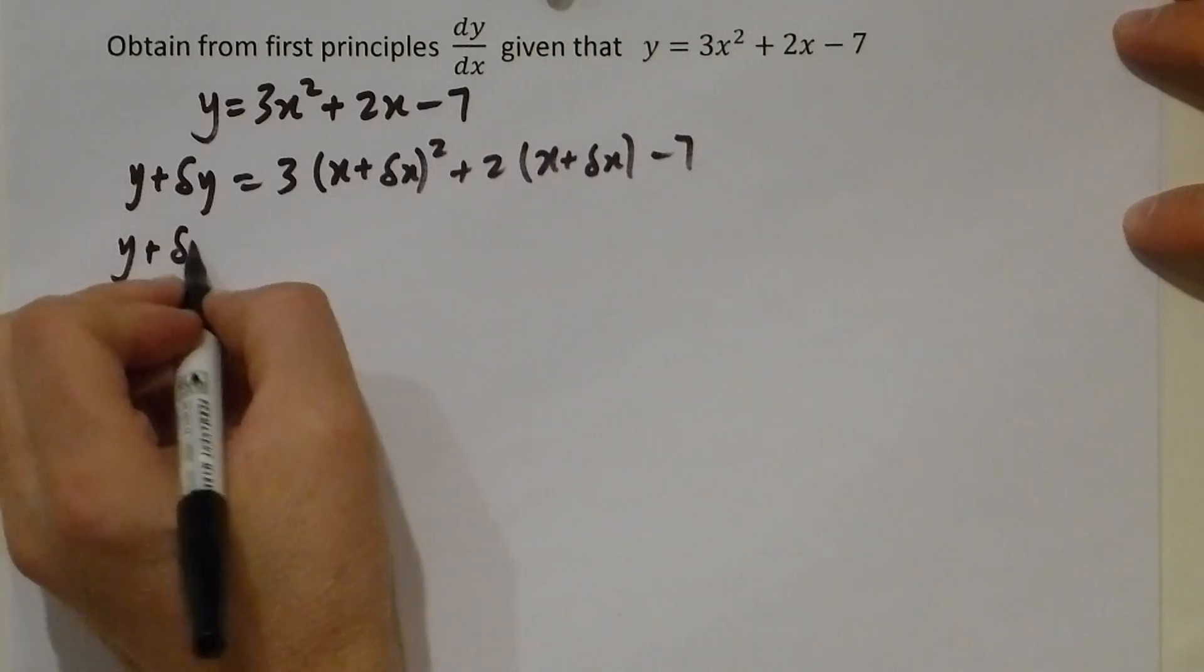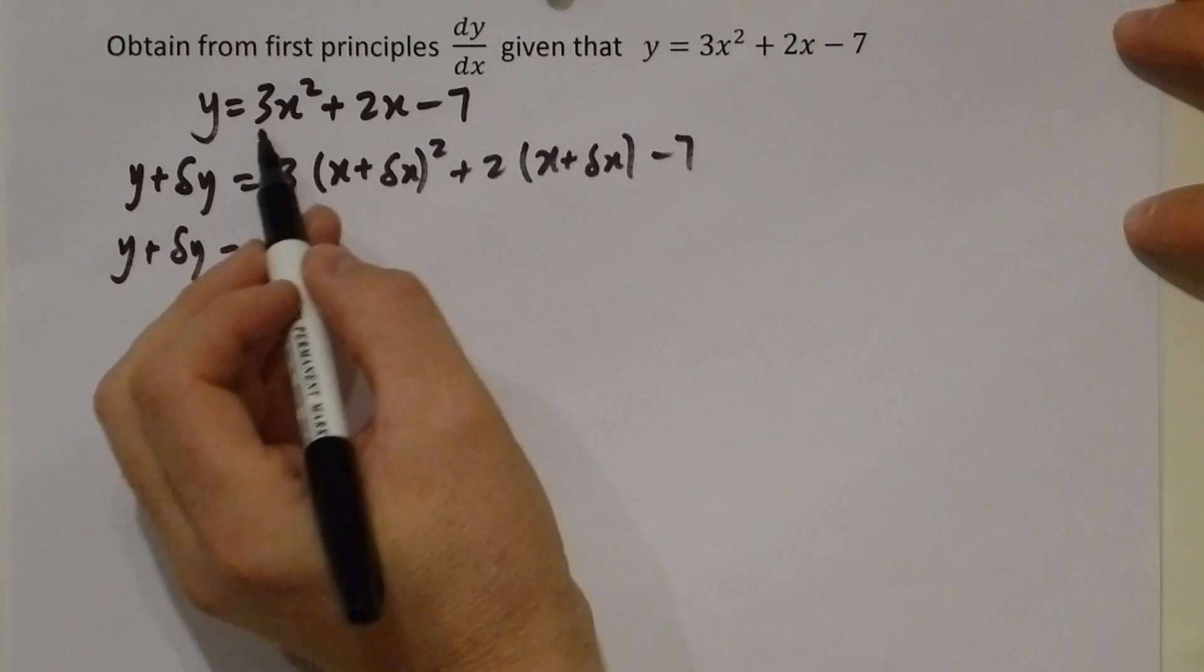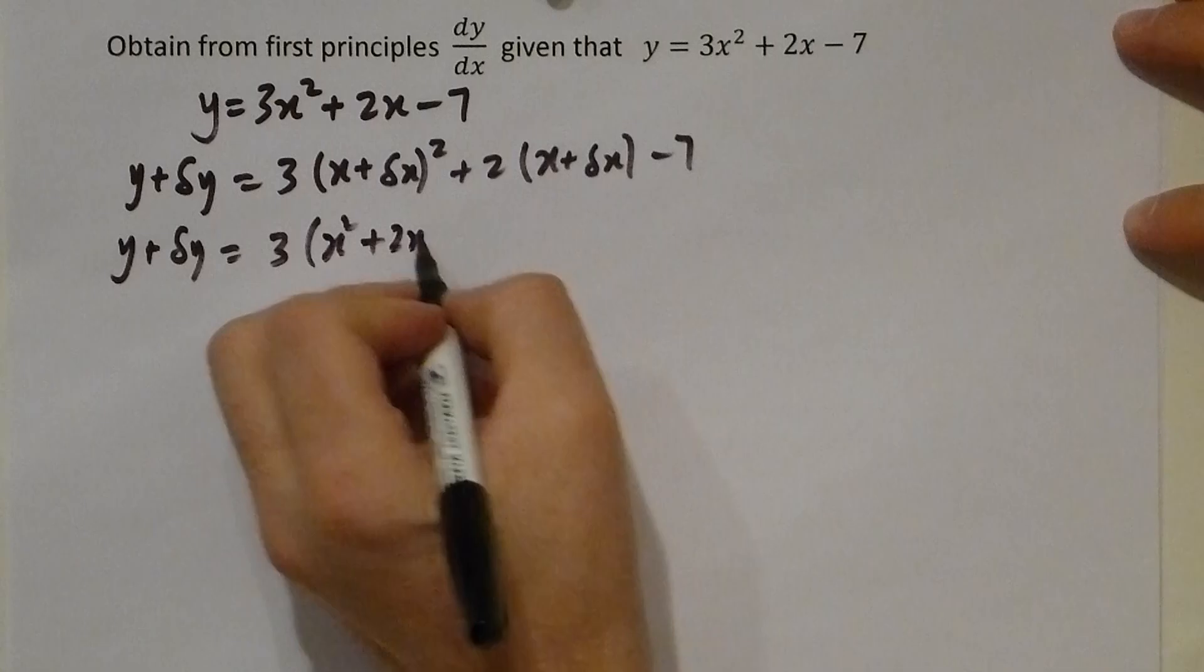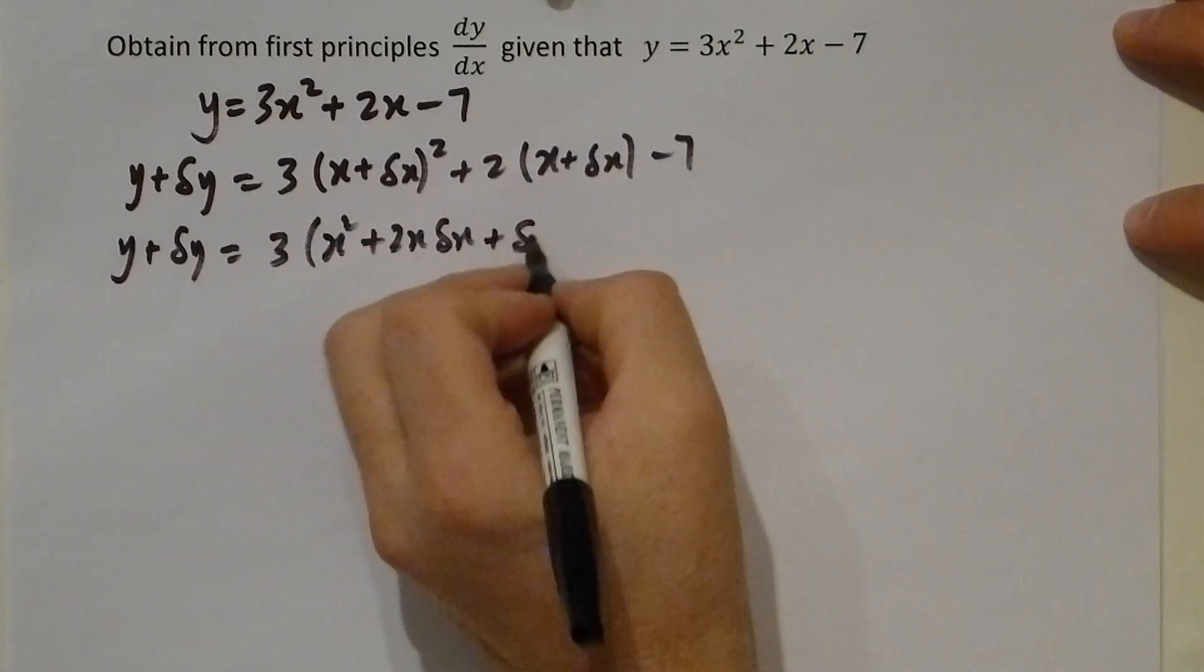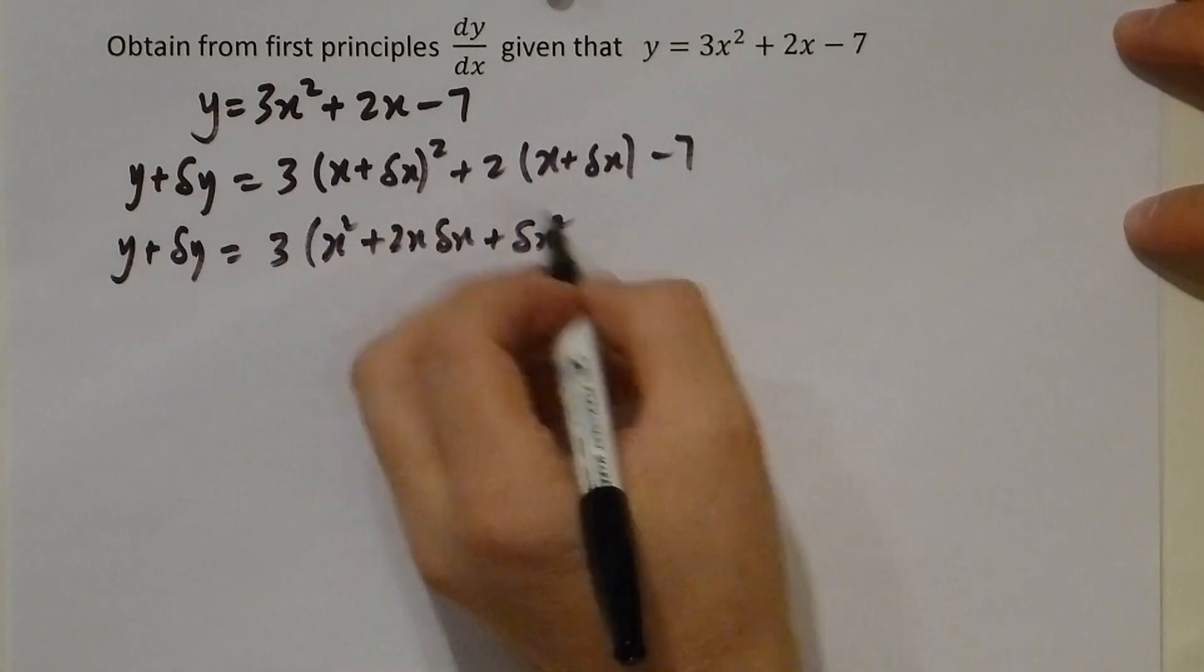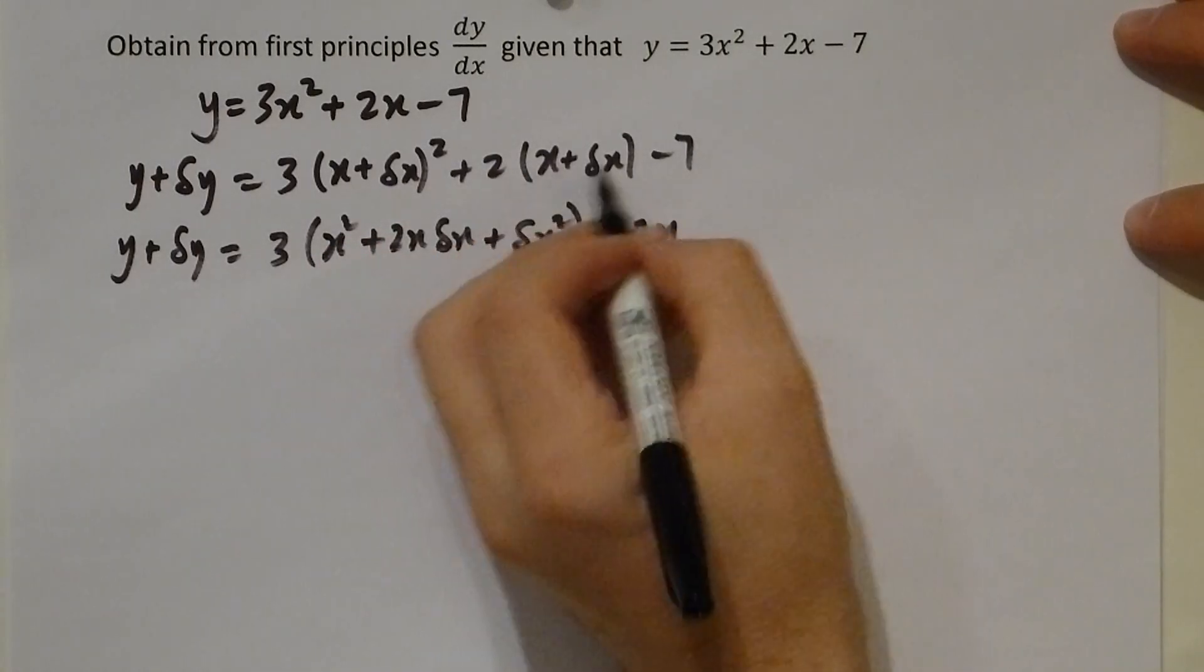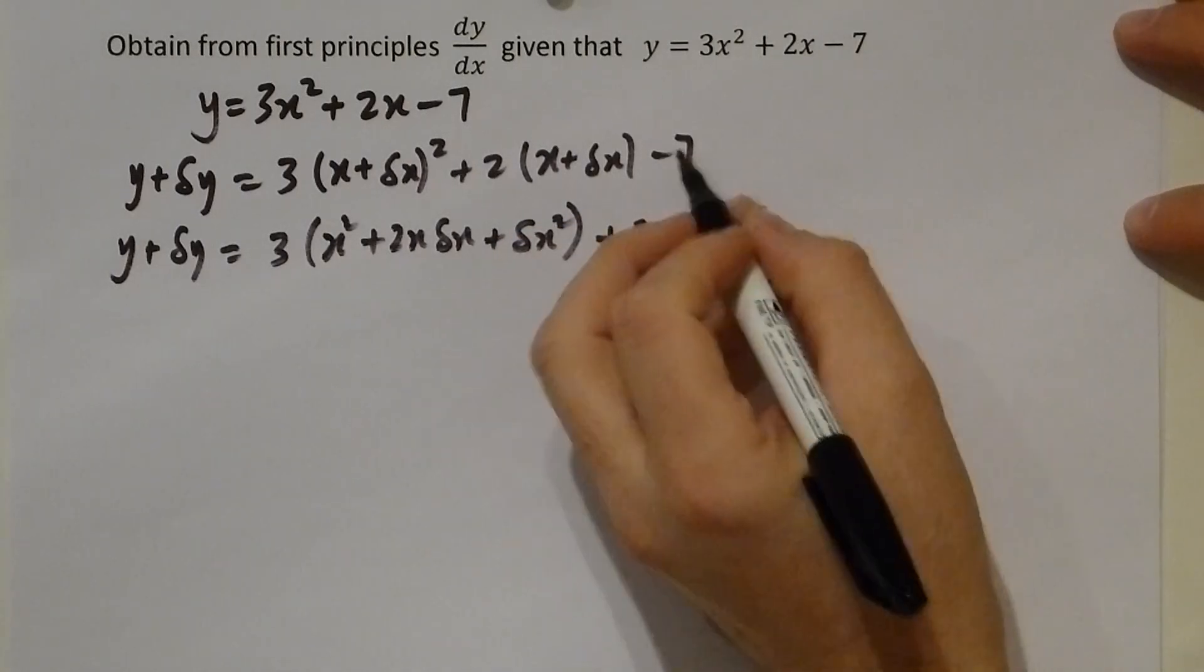We expand the brackets. However, we have a more complicated problem here. Leave the 3 outside: x squared plus x squared gives 2x delta x, which is twice the product, plus delta x squared, plus 2 times x and 2 times delta x, and minus 7.